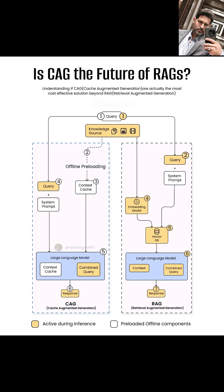which is then used to search a vector database. This vector database contains pre-computed vector embeddings of the information in our knowledge source. The most relevant chunks of information — the context — are retrieved from the vector database and combined with the original query before being fed into a large language model. Finally, the LLM generates a response based on this retrieved context.